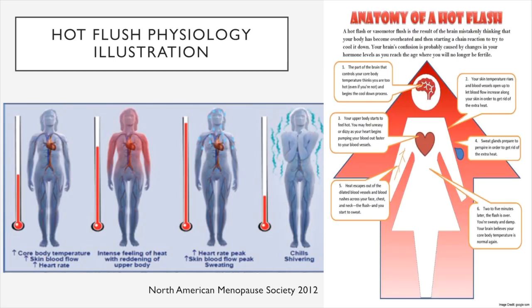Here is a nice illustration of the physiology of hot flashes. First, there is an increase in core body temperature resulting in increased skin blood flow and increased heart rate. Due to the reduced thermoneutral zone, the increase in core body temperature gives rise to an intense feeling of heat with reddening of the upper body. The brain mistakenly thinks the body has become overheated and starts a chain reaction to cool it down by sweating and dissipating the excess heat, after which the body may chill or shiver.